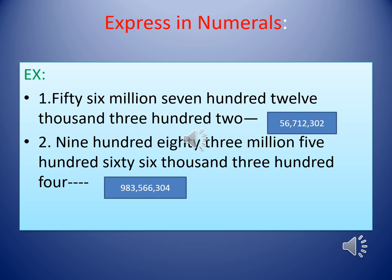We can take another example: 983,566,304. Reading the number name as per the periods: nine hundred eighty-three million, five hundred sixty-six thousand, three hundred four.